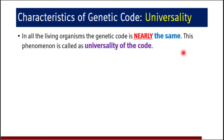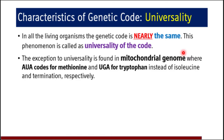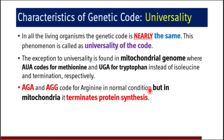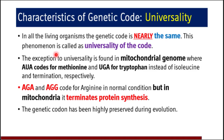The next property is universality. The genetic code is universal — in all living organisms, the genetic code is nearly the same, though there may be a few exceptions. This phenomenon is called universality of the code. The exceptions are found in the mitochondrial genome, where AUA codes for methionine instead of AUG, UGA codes for tryptophan instead of being a termination codon, and AGA and AGG are termination codons instead of coding for arginine.